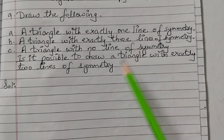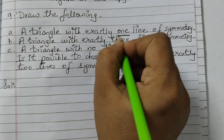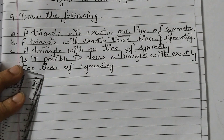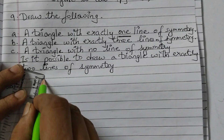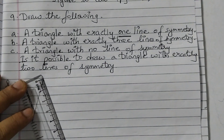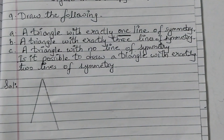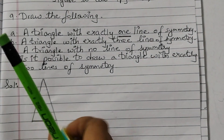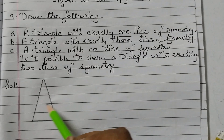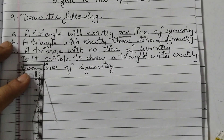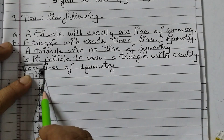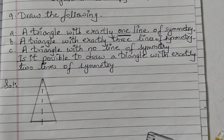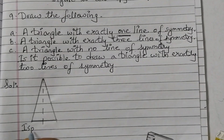First we will draw a triangle with exactly one line of symmetry. For that I'll take a ruler and I will draw an isosceles triangle. An isosceles triangle has two equal sides, so let's say my triangle is like this. You just need to show that these two sides are equal and the line of symmetry would be like this — you can show using a dotted line. So this is your line of symmetry, and this is an isosceles triangle.